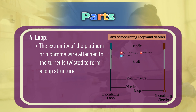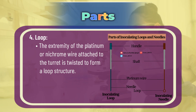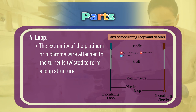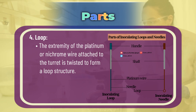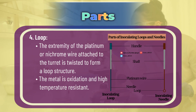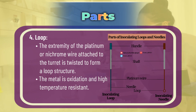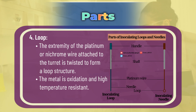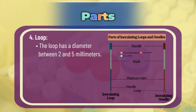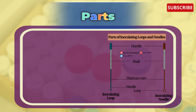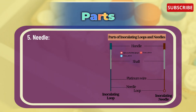The main part is the loop. The extremity of the platinum or nichrome wire attached to the turret is twisted to form a loop structure. The metal is oxidation- and high-temperature-resistant. The loop has a diameter between 2 to 5 millimeters. Next, the needle is essentially the same as a loop but makes use of a single wire.